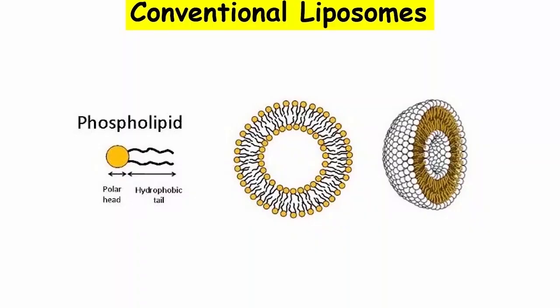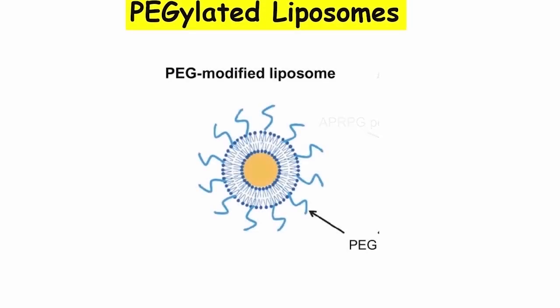Conventional liposomes are composed of phospholipid bilayers and are commonly used for drug delivery. Pegylated liposomes have a layer of polyethylene glycol (PEG) on their surface, which helps increase their circulation time in the bloodstream. These liposomes are also used as drug delivery systems which are more advanced compared to conventional liposomes.